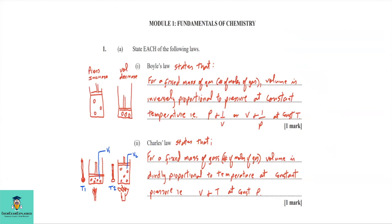Let's look at Boyle's Law and then we'll examine Charles' Law. For the first one, Boyle's Law states that for a fixed mass of gas, volume is inversely proportional to pressure at constant temperature. The expression for that is P is inversely proportional to volume, or volume is inversely proportional to pressure at constant temperature. Note that instead of using a fixed mass of gas, we could use a fixed number of moles of gas. The diagrams on the side show that if you increase pressure, you are actually decreasing volume.